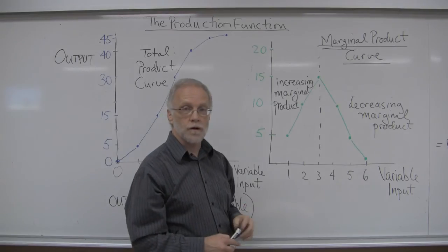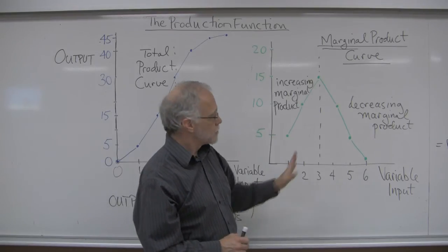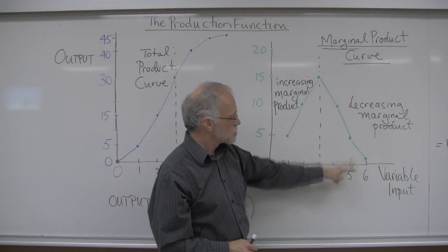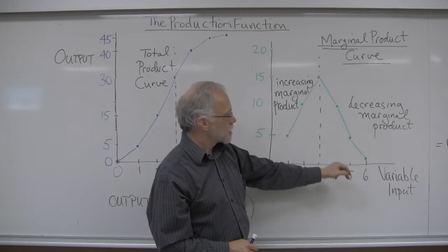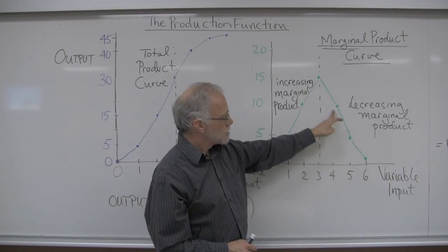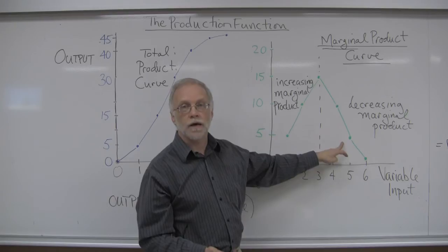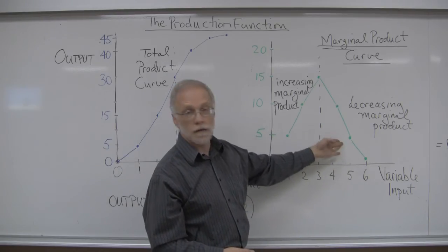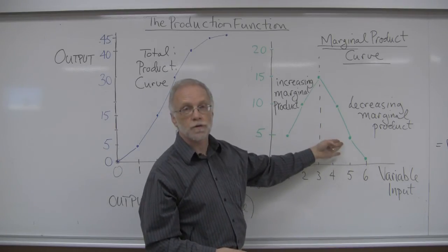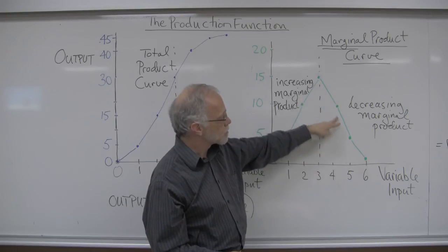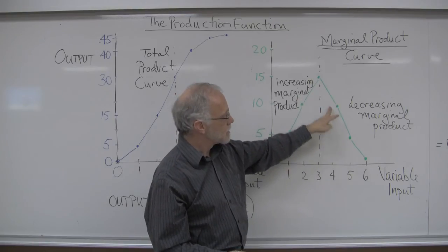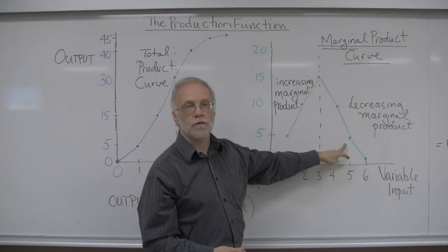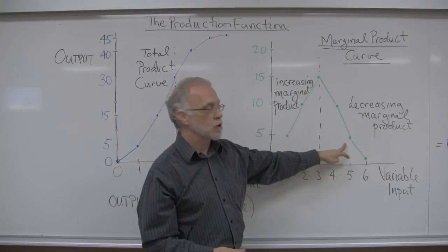It may be fine to produce in the increasing marginal product zone, because it really depends on how much we have to pay for our variable input and the value of what it's producing. But in general, what we're going to see is that production will take place in this area of decreasing marginal product.